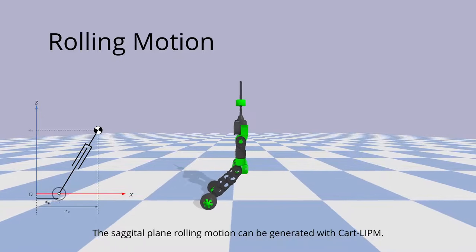Let's begin with the sagittal plane rolling motion. It's generated based on the cart LIP model.